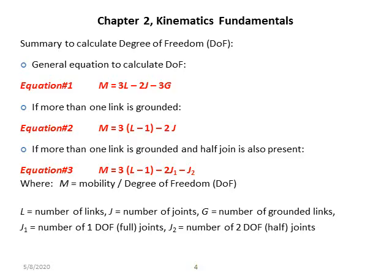If you can see a presence of a half joint in a mechanism supplemented by more than one grounded link, then equation number two is invalid. You have to use equation number three to find mobility or degree of freedom, which is m equal to 3 multiplied by (l minus 1), close bracket, minus 2j1 minus j2. Here j1 represents the number of full joints, j2 represents the number of half joints, l represents the number of links, capital G represents the number of grounded links, and m represents the degree of freedom or mobility.